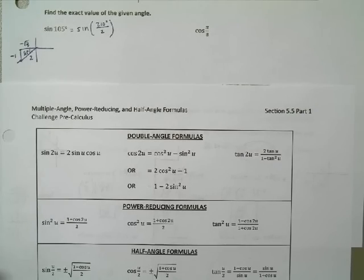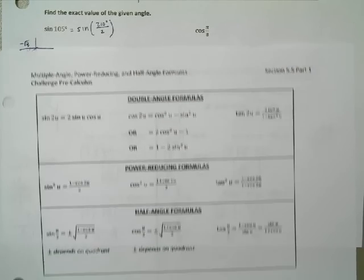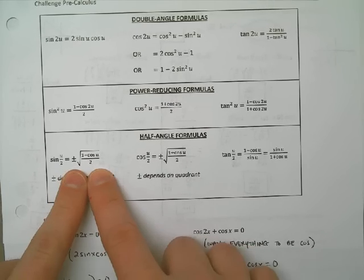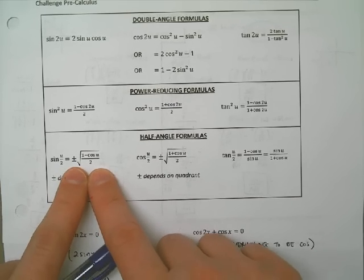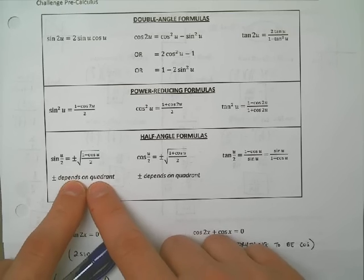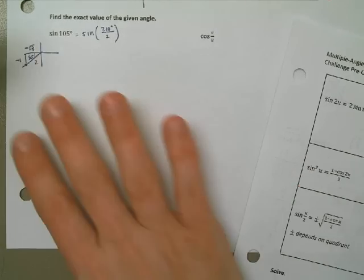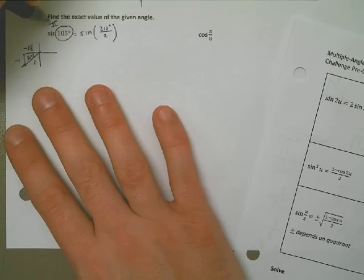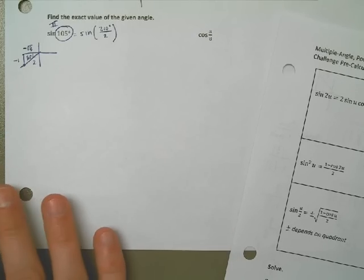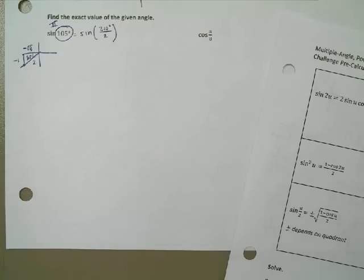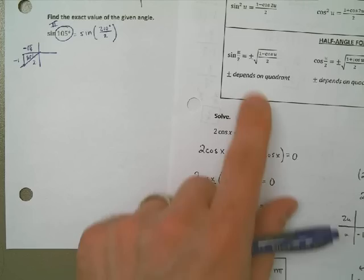The sine of my angle depends on the quadrant — the plus or minus depends on the quadrant. In the end I'm doing sine of 105 degrees, and that angle is in quadrant 2. Because of the mnemonic 'All Students Take Classes,' sine is positive in quadrant 2, so I'm going to use the positive square root when I'm done.